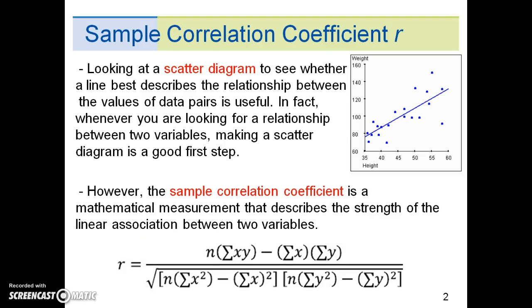Thus, the scatter diagram provides a qualitative visual description of the relationship between two variables, and the sample correlation coefficient describes a quantitative mathematical description of the relationship between two variables.